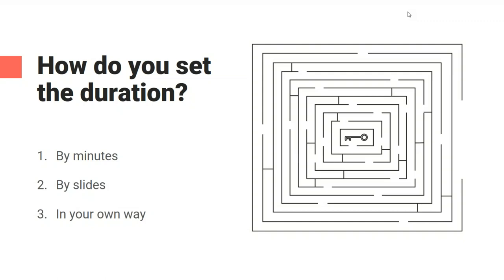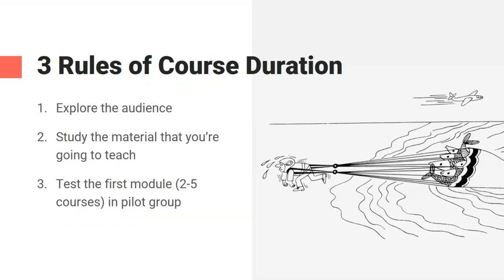I have my own three rules. First, I explore the audience — you should know your learners and understand the type of content they prefer. Then I study the materials I'm going to teach; it can be a simple instruction or complicated materials like books, articles, or software descriptions. After that, I test the first module — two or five courses in a pilot group. It has to be suited for your audience.